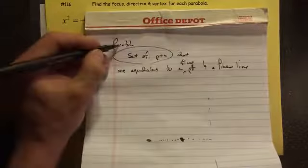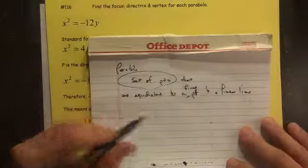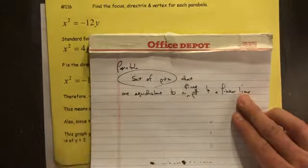It's a set of points. That's what a parabola is. A parabola is a set of points that is equidistant to the fixed point called the focus and the fixed line called the directrix.